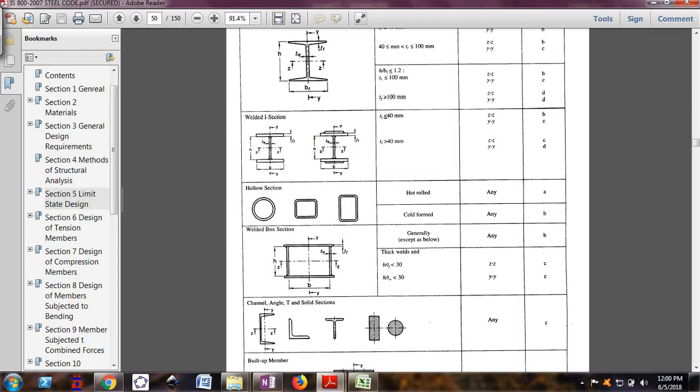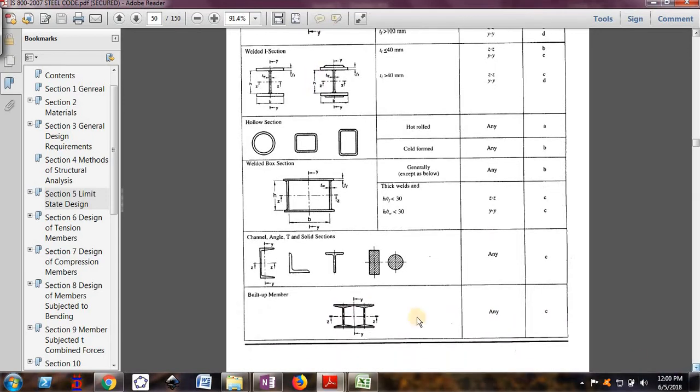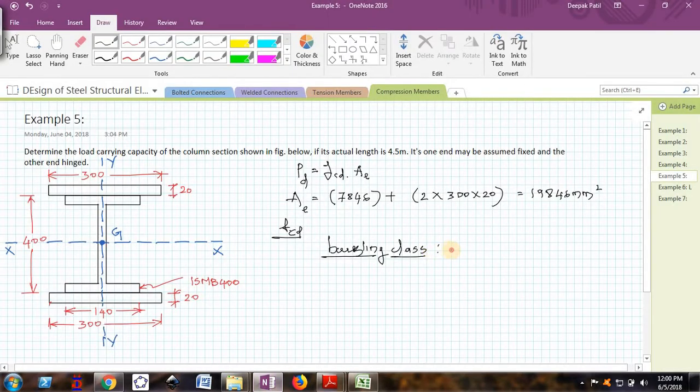Buckling class which is given here. Built-up member where we are using two standard shapes to make one member. This is actually the built-up member. Here we are using a rolled section and a plate to form a column section, so that type of members are called the built-up member. All the built-up members fall under buckling class C. Now we know which buckling class it falls under.